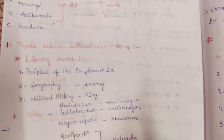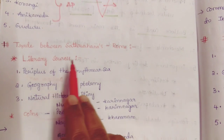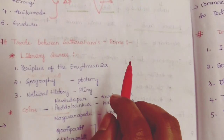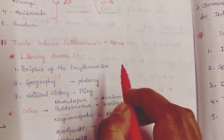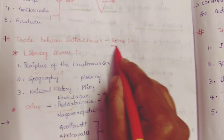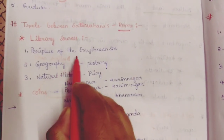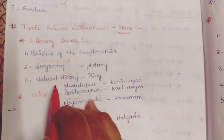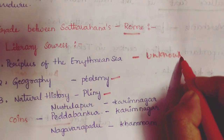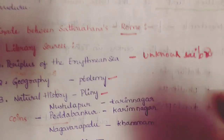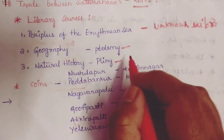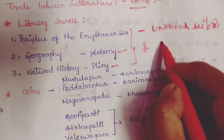As mentioned in the Satavahana dynasty coins video, there was trade between Rome and the Satavahanas. The sources that tell us about this trade are literary sources — the Periplus of the Erythraean Sea, Geography by Ptolemy, and Natural History by Pliny. The Periplus of the Erythraean Sea was written by an unknown sailor. All these are very important literary sources for exams.